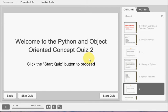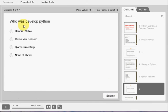Time for activity. We start our activity. Who wants to develop Python? Dennis Ritchie? No. Dennis Ritchie developed C. Guido Van Rossum? Yes. This is the correct answer.